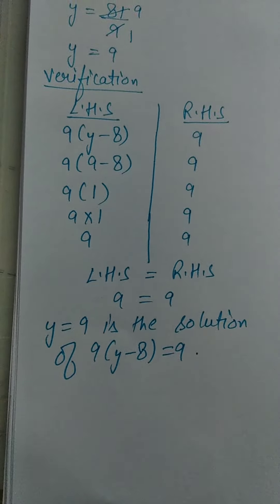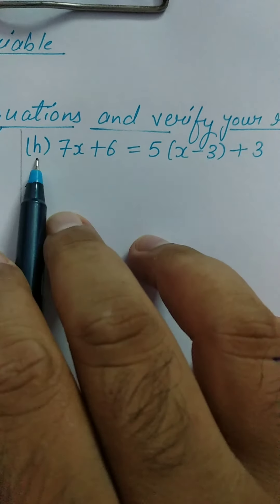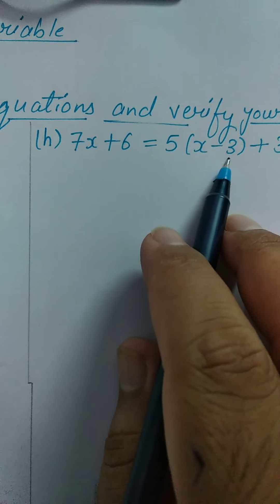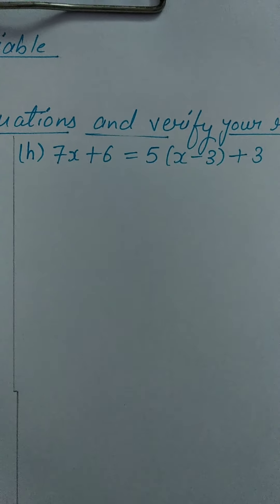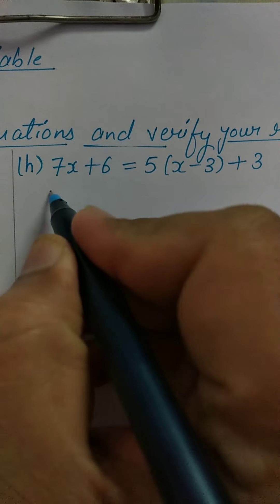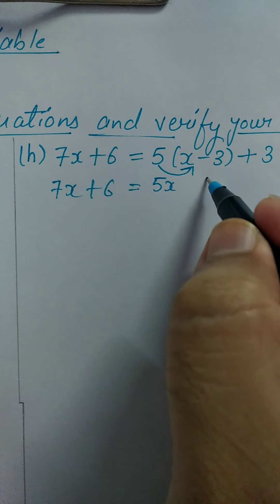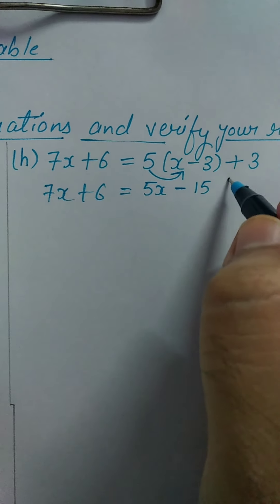Now come to part H. In part H, you have 7X plus 6 equal to 5 in bracket X minus 3 plus 3. First of all, solve this equation. Then, 7X plus 6 equal to 5 multiplied by X. First, open the bracket — we will multiply the 5. 5 multiplied by X is 5X, 5 multiplied by 3 is 15. In the middle, we have a minus sign, so put minus sign. Plus 3.